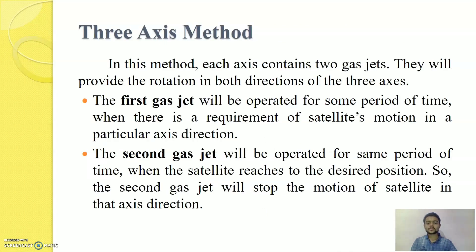In 3-axis method, each axis contains 2 gas jets. That is, for Roll Axis there will be 2 gas jets, Pitch Axis there will be 2 gas jets and Yaw Axis there will be 2 gas jets. Thus, there will be total 6 gas jets. The first gas jet will be operated for some period of time when there is requirement of satellite's motion in a particular axis direction. The second gas jet will be operated for the same period of time when the satellite reaches to the desired position. Thus, the second gas jet will stop the motion of satellite in that axis direction. We can illustrate this with the help of suppose our satellite is moving in right direction. So that, the first gas jet will force the satellite to move in left direction. And the second gas jet will stop the motion of the satellite in the left direction and it will stabilize the satellite in the correct orbit.